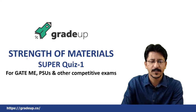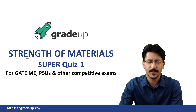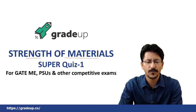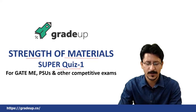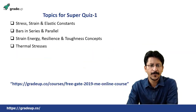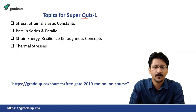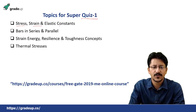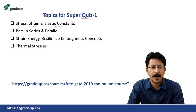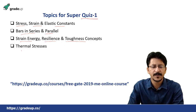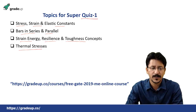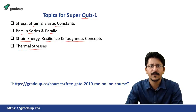Now comes the turn of the next subject, that is Strength of Materials. We will be conducting three super quizzes in this subject. The topics covered in super quiz one will be: stress, strain and elastic constants; bars in series and parallel; strain energy, resilience and toughness; and thermal stresses. These are the four topics for super quiz one.